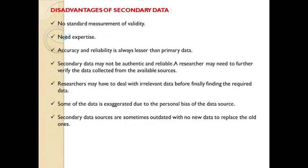Disadvantages of secondary data: There is no standard measurement of validity. Expertise is required. Accuracy and reliability are always lesser than primary data. Secondary data may not be authentic and reliable, and a researcher may need to further verify the data. Researchers may have to deal with irrelevant data. Some data is exaggerated due to personal bias of the data source. Secondary sources are sometimes outdated with no new data to replace the old ones.